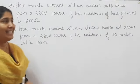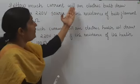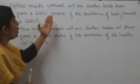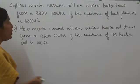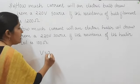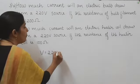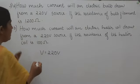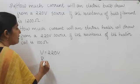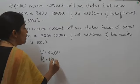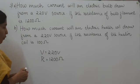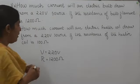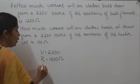Our third question is: how much current will an electric bulb draw from a 220 volt source? Voltage is given as 220 volt and resistance of the filament is 1200 ohm. We want to find out the current.